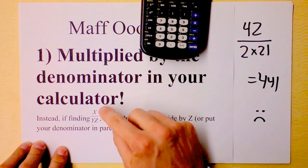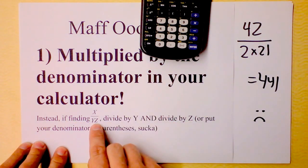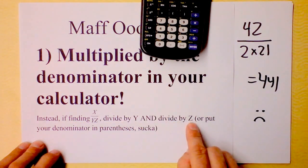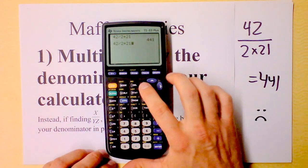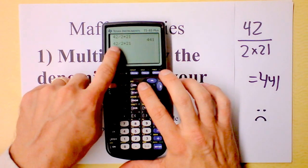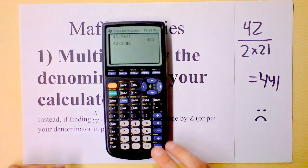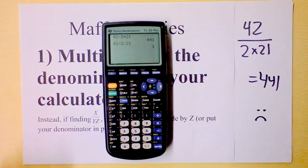You were trying to find x divided by y times z. You should divide by y and divide by z. So one option is to do second entry, and instead of dividing by 2 and multiplying by 21, I'll divide by 2 and divide by 21. Oh, the answer's 1.